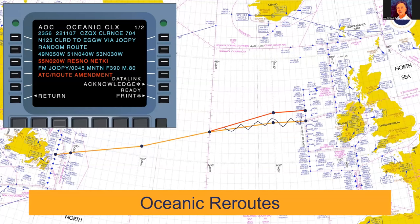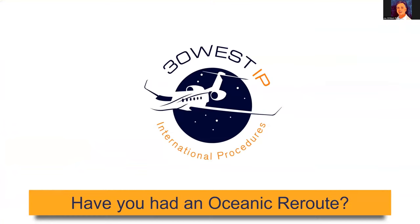When that reroute occurs, the expectation is that this new re-clearance requires you to change the route. There are three critical elements we're going to look at and deconstruct. Before we get into the details, we'd like to get a little feedback from you so everyone can appreciate how many people this affects. Our question is: have you ever received an oceanic reroute?